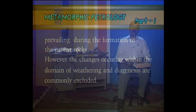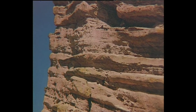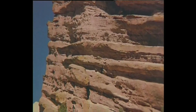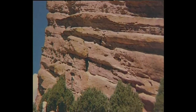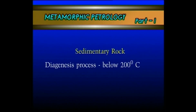Normally, igneous rocks are formed at very high temperatures, ranging from 650 up to 1200 degrees centigrade. For sedimentary rock formation, sediments are transported and deposited in a geosynclinal basin, where compaction, lithification, and diagenesis occur, changing sediments into sedimentary rocks. The diagenesis process occurs below 200 degrees centigrade. In diagenesis, no new set of minerals forms — only recrystallization of minerals occurs.